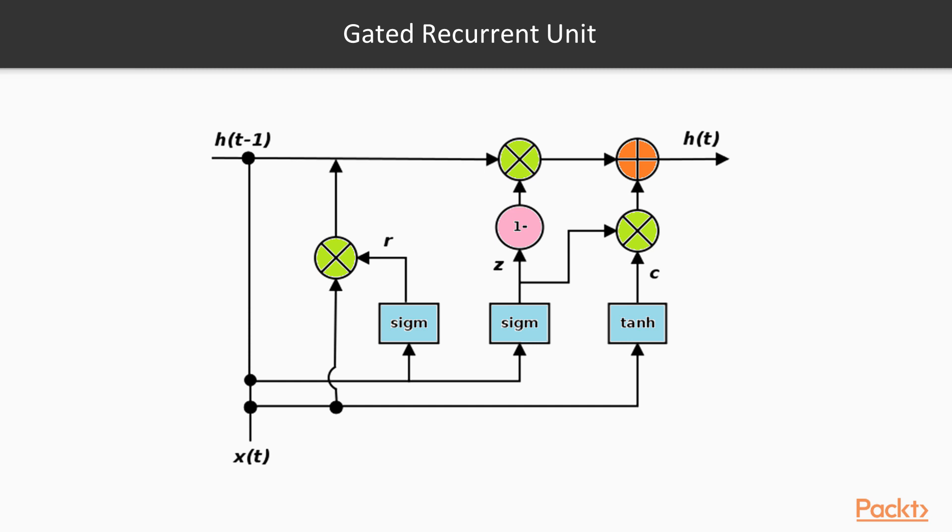The next step is to decide what new information we are going to store in the cell state. This has two parts. First, a sigmoid layer called the input gate decides which values need to be updated. Next, a tanh layer creates a vector of new candidate values that could be added to the state.